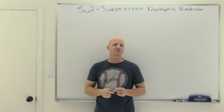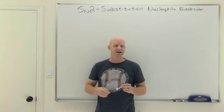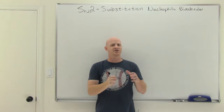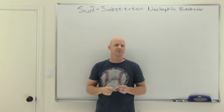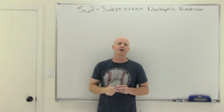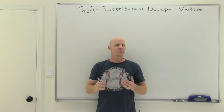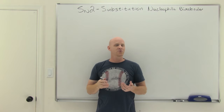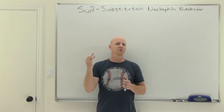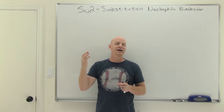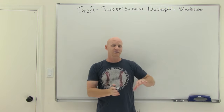SN2 reactions will be the topic in this first lesson in a chapter devoted to substitution and elimination reactions. After SN2, we'll move on to SN1 reactions and compare and contrast the two, then move on to elimination reactions. We'll start by talking about the mechanism of the SN2 reaction — commonly referred to as backside attack — then cover the rate law, kinetics, and factors that affect the outcome: substrate effects, nucleophile effects, solvent effects, and leaving group effects.